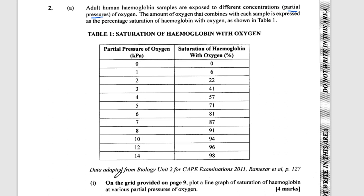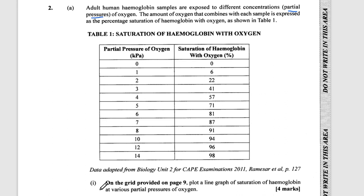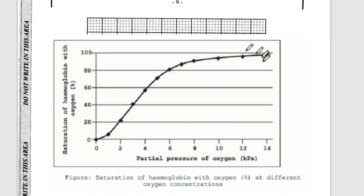On the grid provided, plot a line graph of saturation of haemoglobin at various partial pressures of oxygen. At very low partial pressures, saturation of haemoglobin with oxygen is 0, but it shows an exponential increase at a point, then begins to plateau with a decreasing rate of increase at very high partial pressures. The shape of this graph is described as S-shaped or sigmoidal. At high partial pressures, haemoglobin becomes fully saturated with oxygen.